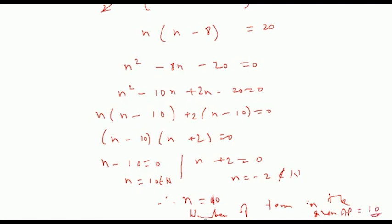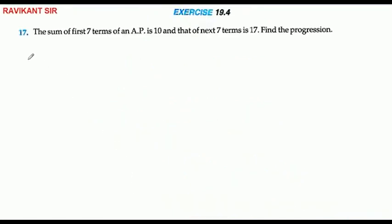Next, problem 17: The sum of first 7 terms of an AP is 10, and the sum of the next 7 terms is 17. Find the progression.